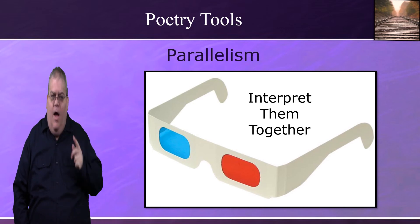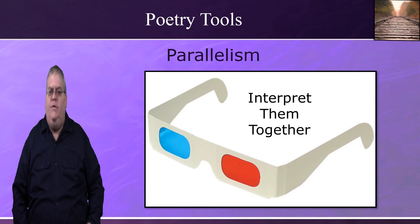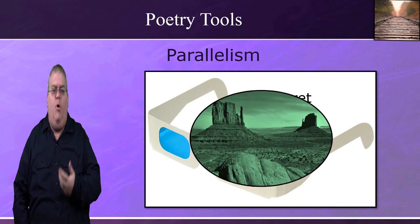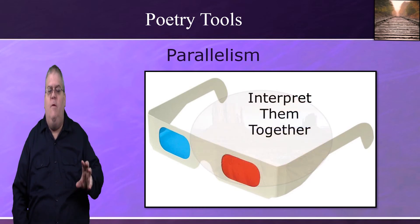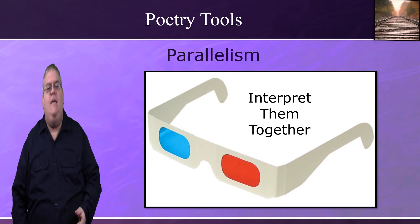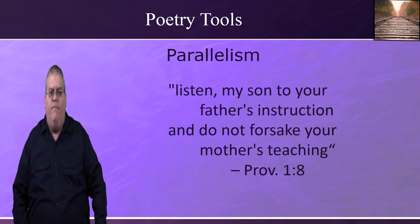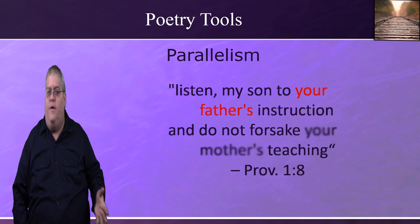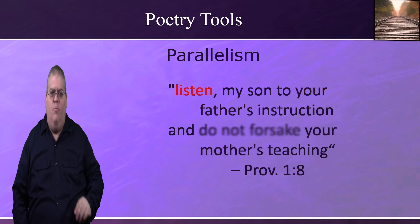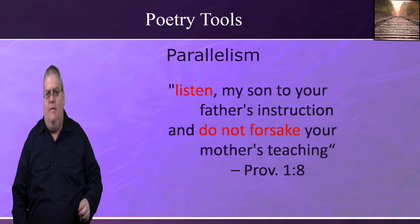Seeing them together is kind of like binocular vision — think of wearing 3D glasses. We see the same thing from two slightly different perspectives: one view with our left eye, one with our right eye, and when our brain puts both together, we have depth perception. So when you see both lines of poetry together, you see the depth of the author's meaning. For instance, Proverbs 1:8 says, 'Listen, my son, to your father's instruction, and do not forsake your mother's teaching.' That doesn't mean listening only applies to the father — the two lines together mean the son is to listen to and keep the teaching and instruction from both his father and his mother.